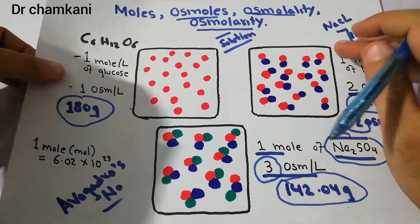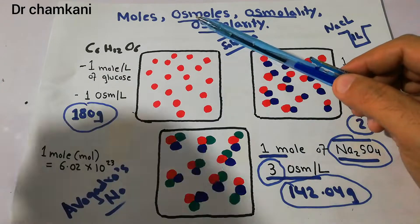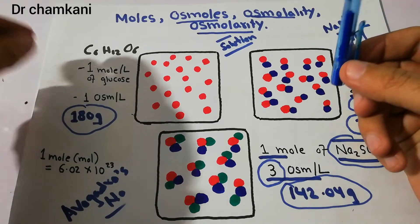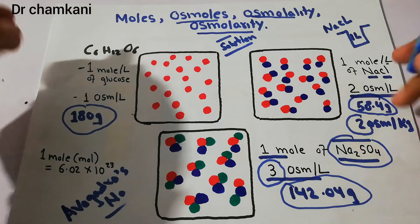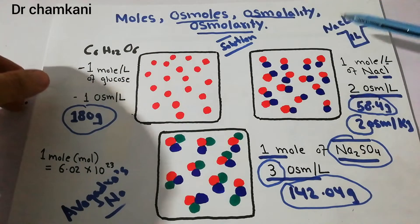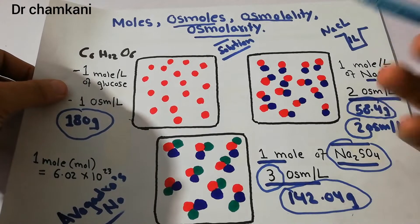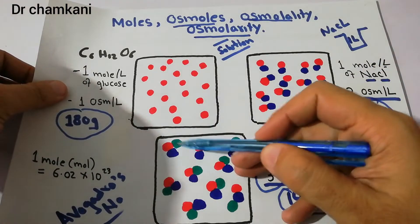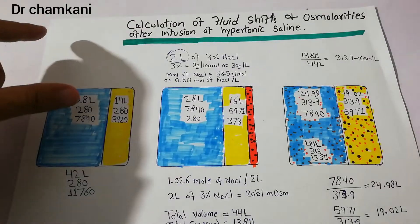Some molecules have one particle per mole, giving one osmole per mole. Sodium chloride splits into two particles, so it exerts double osmolar pressure. Sodium sulfate splits into three particles, exerting triple osmolar pressure. This dissociation is critical for calculating osmolarity.